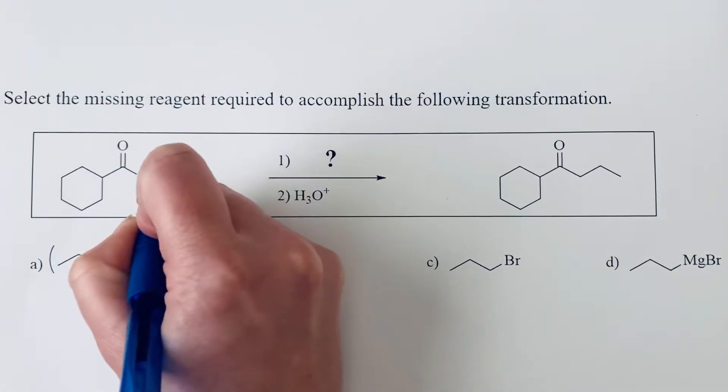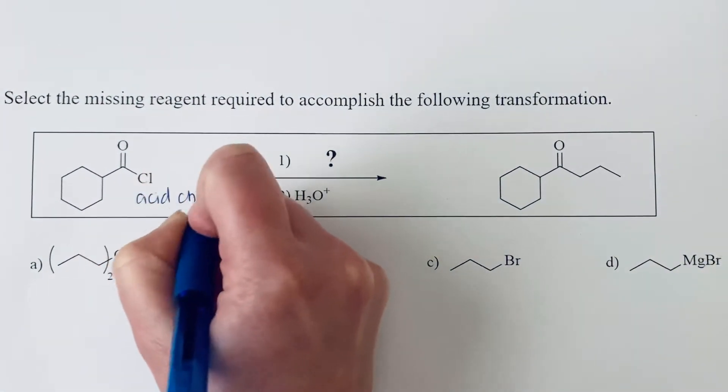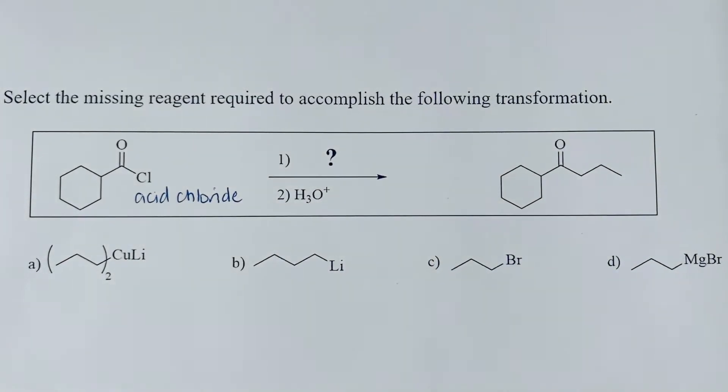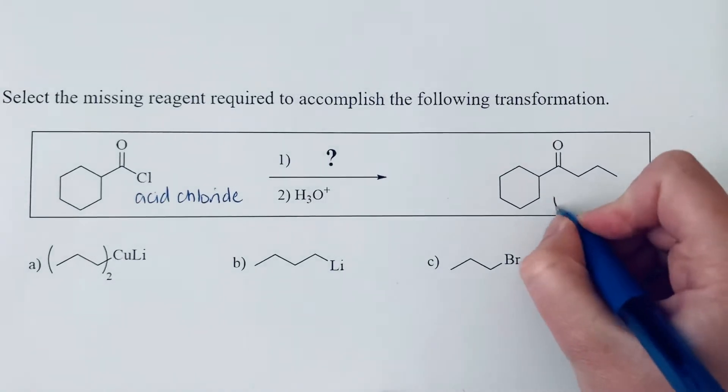So we are starting with an acid chloride, which is the most reactive type of carbonyl compound that we've seen, and we are finishing with a ketone.